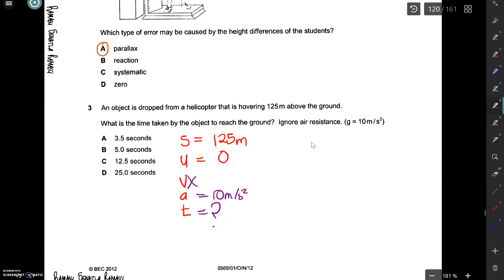Now we use the equation S is equal to UT plus half AT squared. But because we know that our U is zero, we can take this part out of the equation and we end up with S is equal to half AT squared.